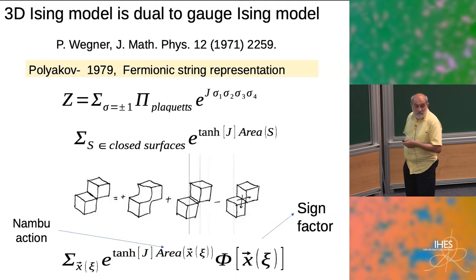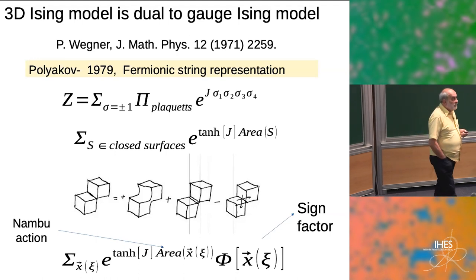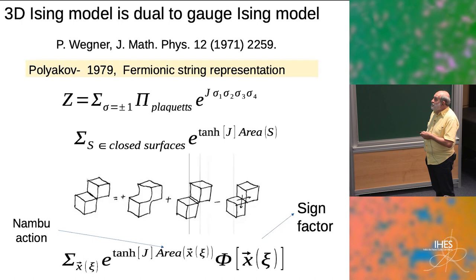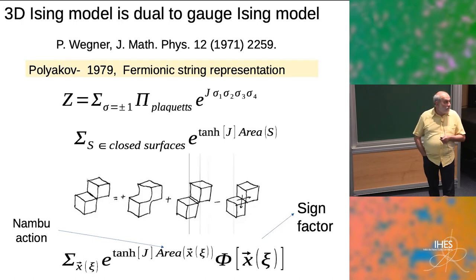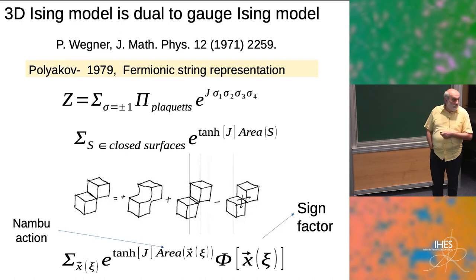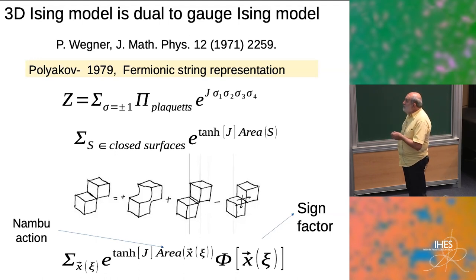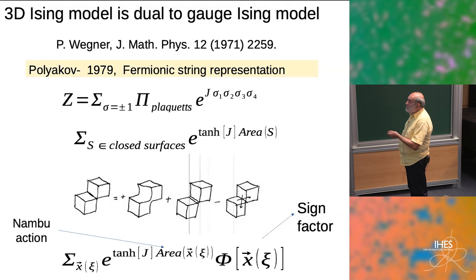What do those three pictures mean? They show self-intersecting cases: in one, arrows are crossing each other; in the others, they are not. With this sign, you can rewrite the sum as a sum over parameterized surfaces X(ξ), but you must put this sign factor in as an argument there.